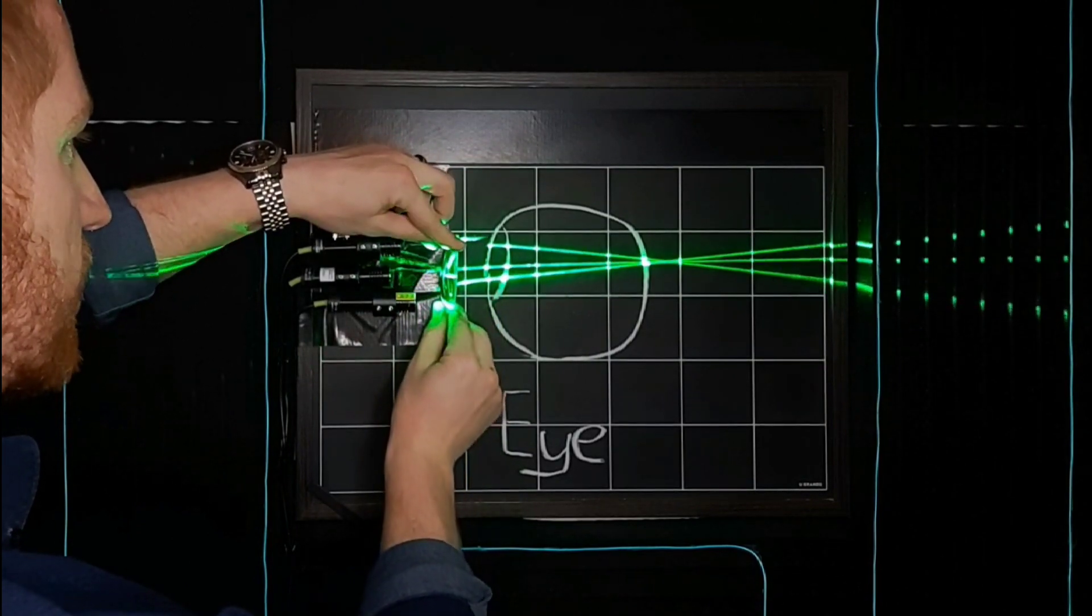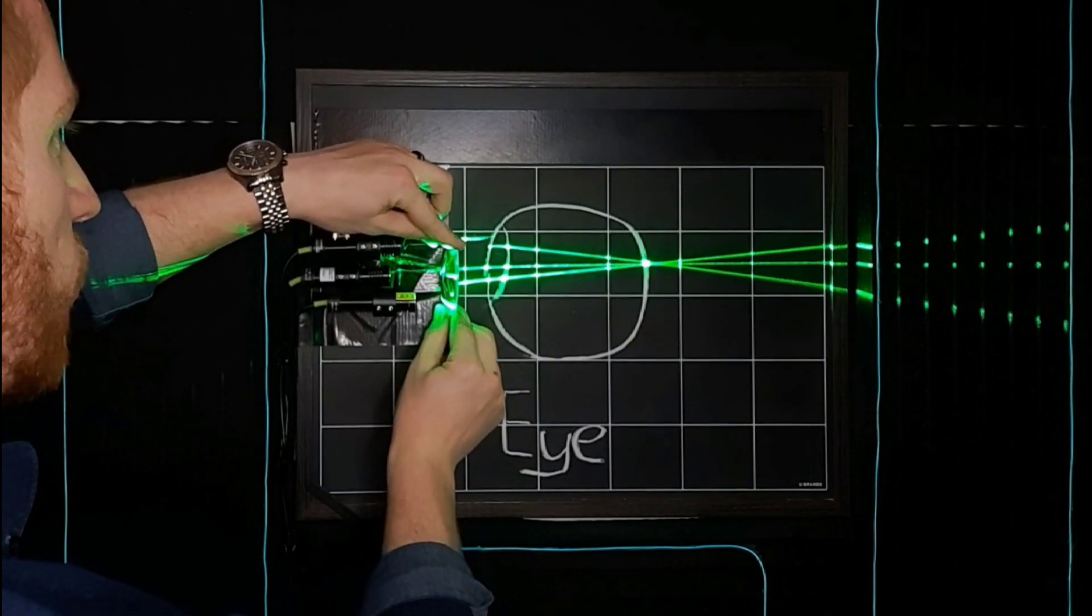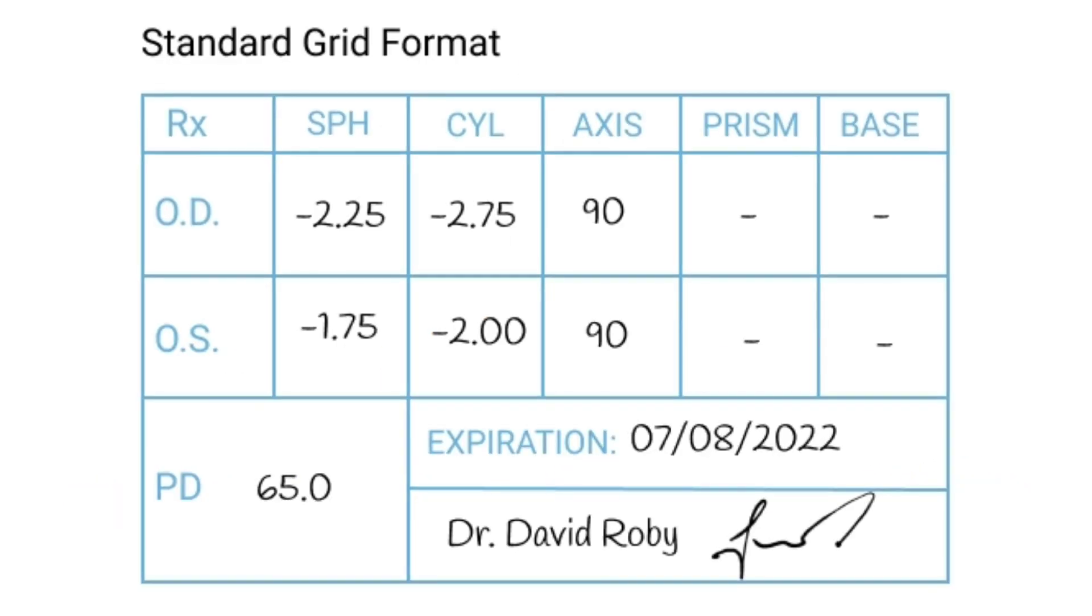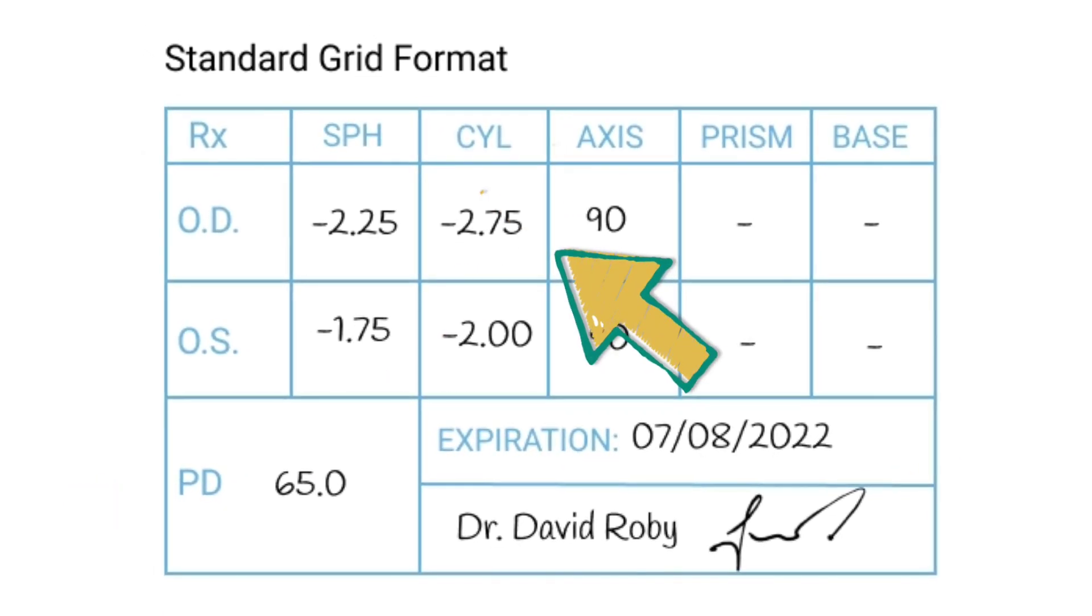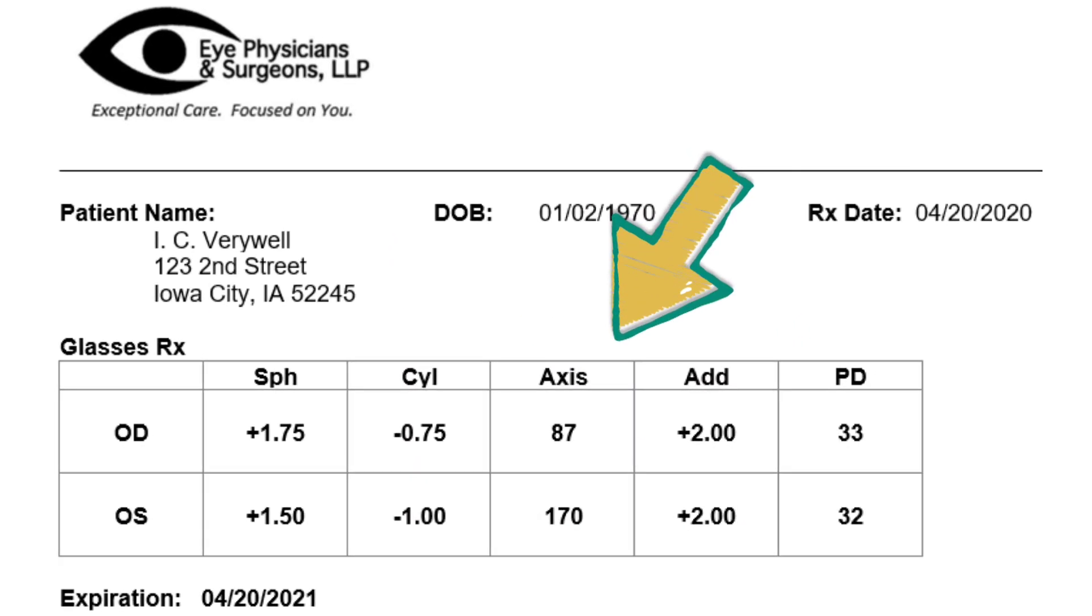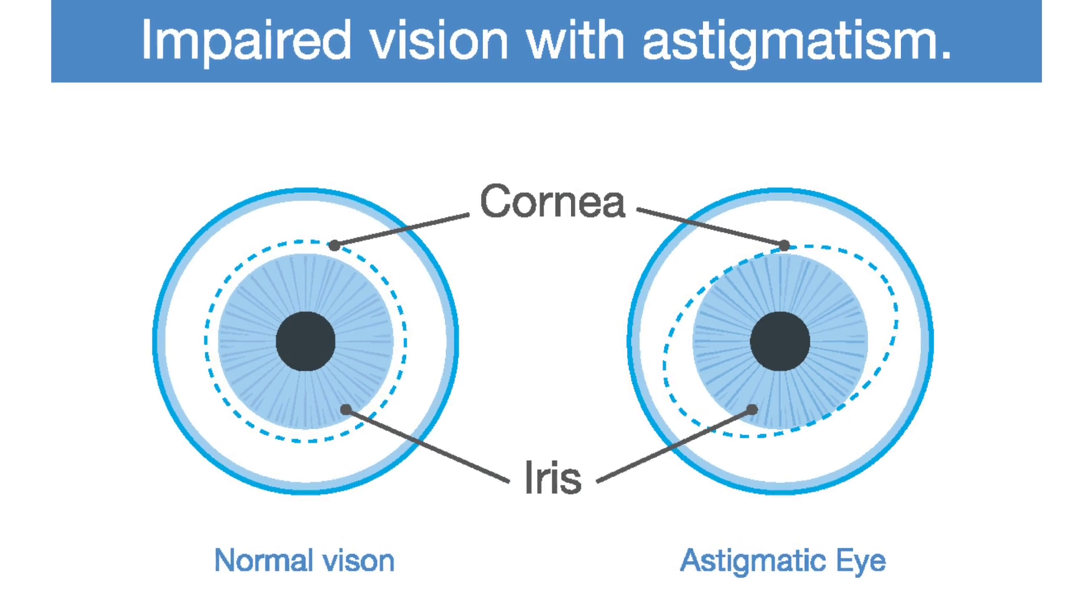So as I rotate this lens for astigmatism, you'll see that the way it bends light changes. Your eye prescription will have a cylinder or CYL number if you have astigmatism, and the axis number describes the orientation of your astigmatism.